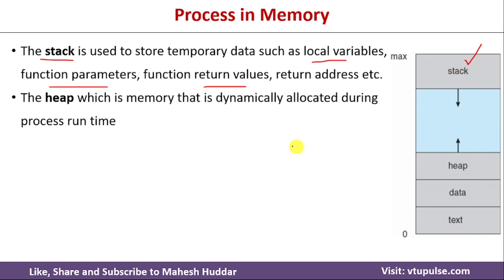The second part of the process is the heap. The heap memory is allocated dynamically during the execution of the program. Whenever we start executing a program on the CPU, it may need extra memory, and that will be allocated from the heap memory.